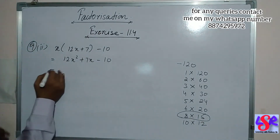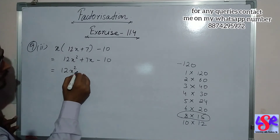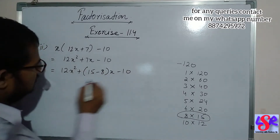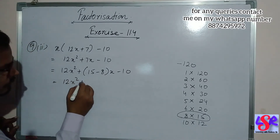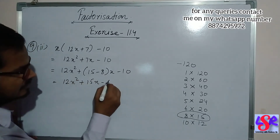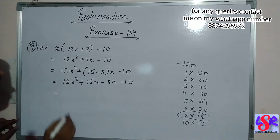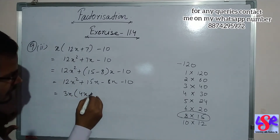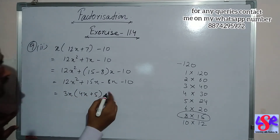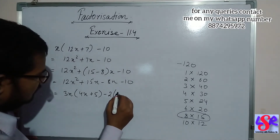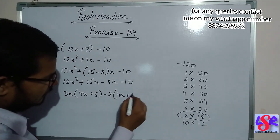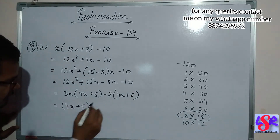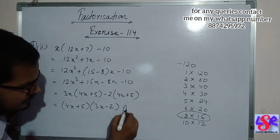So we write this as 12x square plus 15x minus 8x minus 10. Taking 3x common from the first two gives 4x plus 5, and taking minus 2 common from the last two also gives 4x plus 5. Taking 4x plus 5 as common, the answer is 4x plus 5 into 3x minus 2.